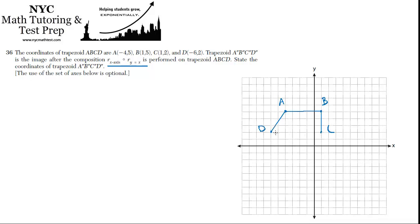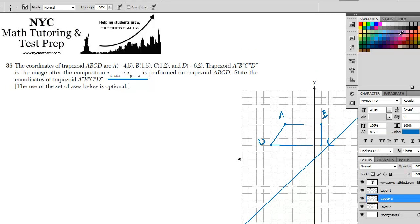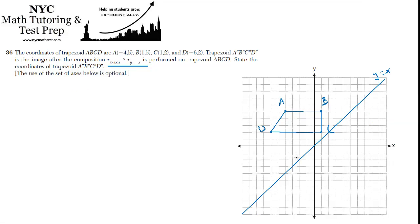That's a trapezoid. We're going to reflect this about the line y equals x, which is that line. This is y equals x. Let's grab a different color. We can do the trapezoid prime. The first one we're going to do is a reflection about that line y equals x. Everything flips to the opposite side.